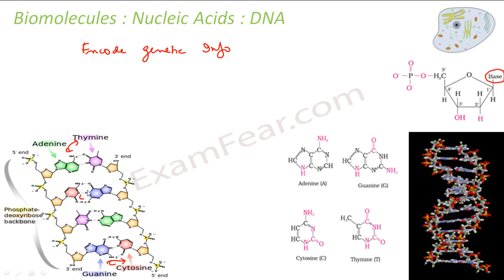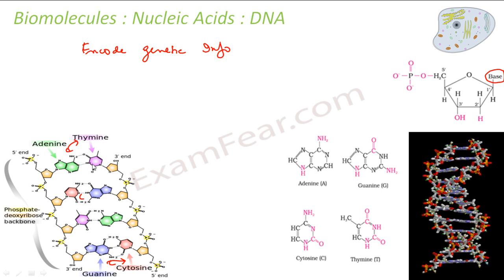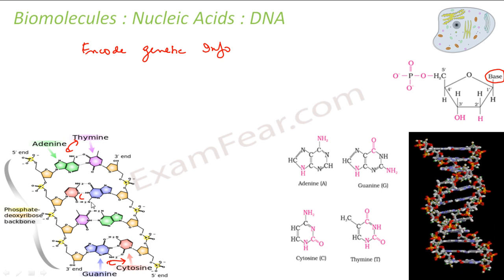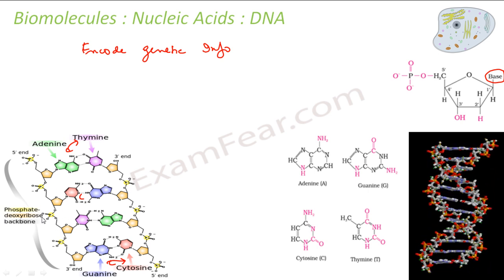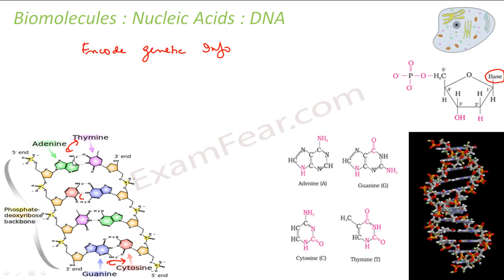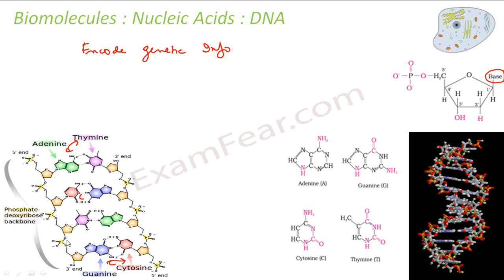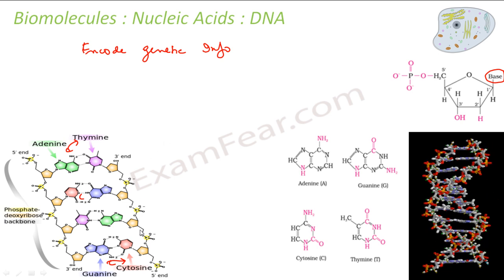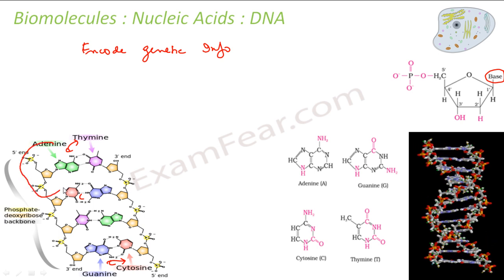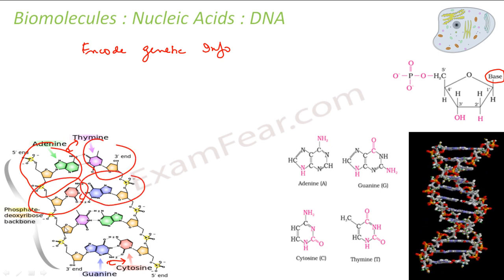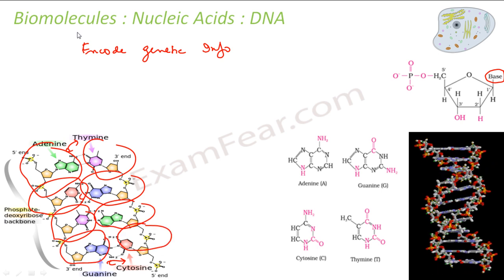DNA is a long chain of nucleotides. Each nucleotide has a deoxyribose sugar with a nucleobase — which can be adenine, guanine, cytosine, or thymine — along with phosphoric acid. Adenine pairs with thymine and guanine pairs with cytosine, forming this kind of structure. The phosphate-deoxyribose forms the backbone. All these nucleotides pair together to form one DNA molecule.